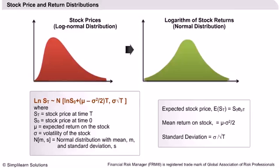The logarithm of the stock price follows a normal distribution with the parameters as given in the slide, which is a function of the stock price at the initial time, the expected return on the stock, the volatility of the stock, and the time to expiry. The expected return from a stock is given by the formula on the right side, which is the initial stock price multiplied by e raised to the power of mu times t. The mean return on a stock is a function of the expected return on the stock and the volatility.